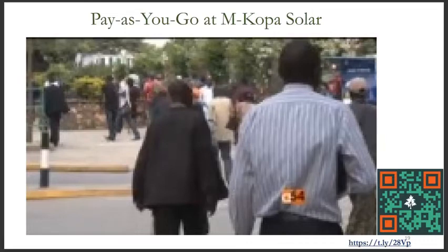Please use the QR code or website link to the right side of the screen to watch a short YouTube video. The video describes how the Kenyan firm M-Kopa sells solar systems to rural households using the pay-as-you-go revenue model.